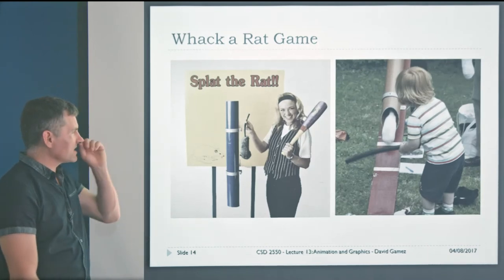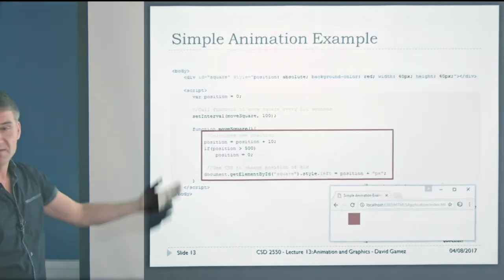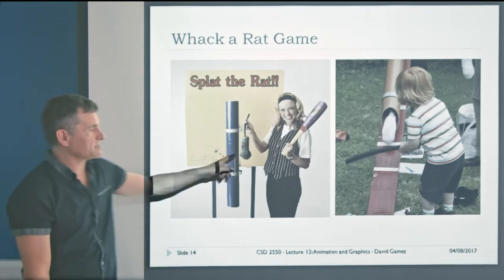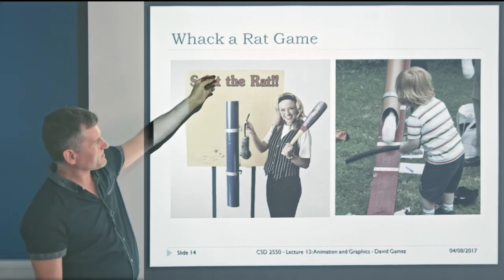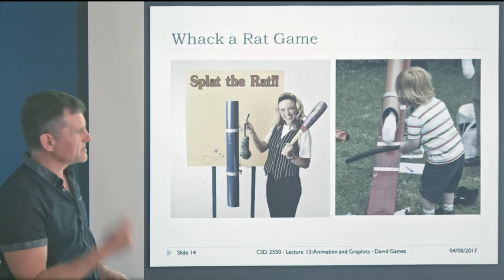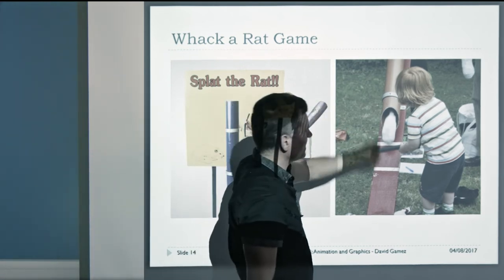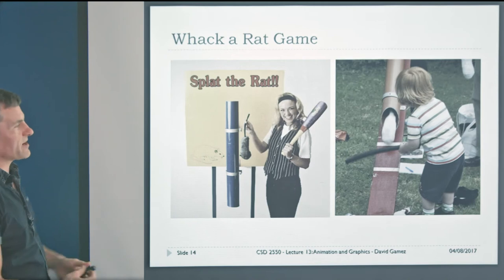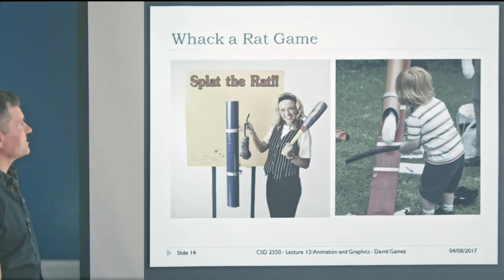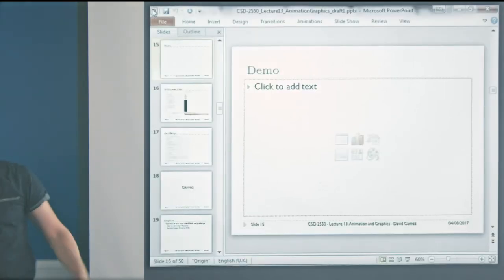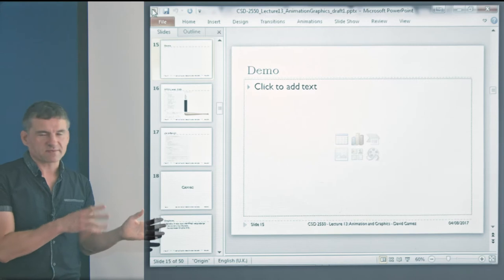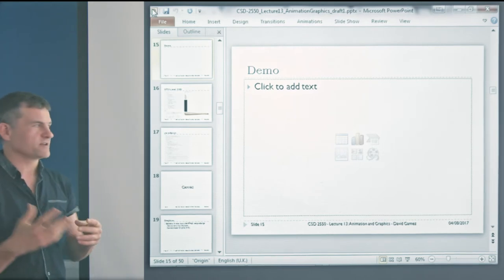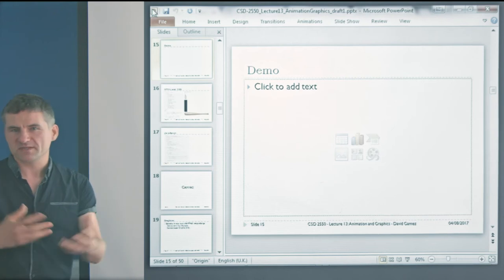For a slightly more sophisticated example, let's have the 'Splat the Rat' game — using a fake rat, of course. The idea is you drop the fake rat at the top of a tube, guess when it's going to come out, and try to hit it as it emerges. It's a typical fairground game. All the source code for these demos is available on the course website, so you can download it, see how they're implemented, and use it as a starting point for your own games.